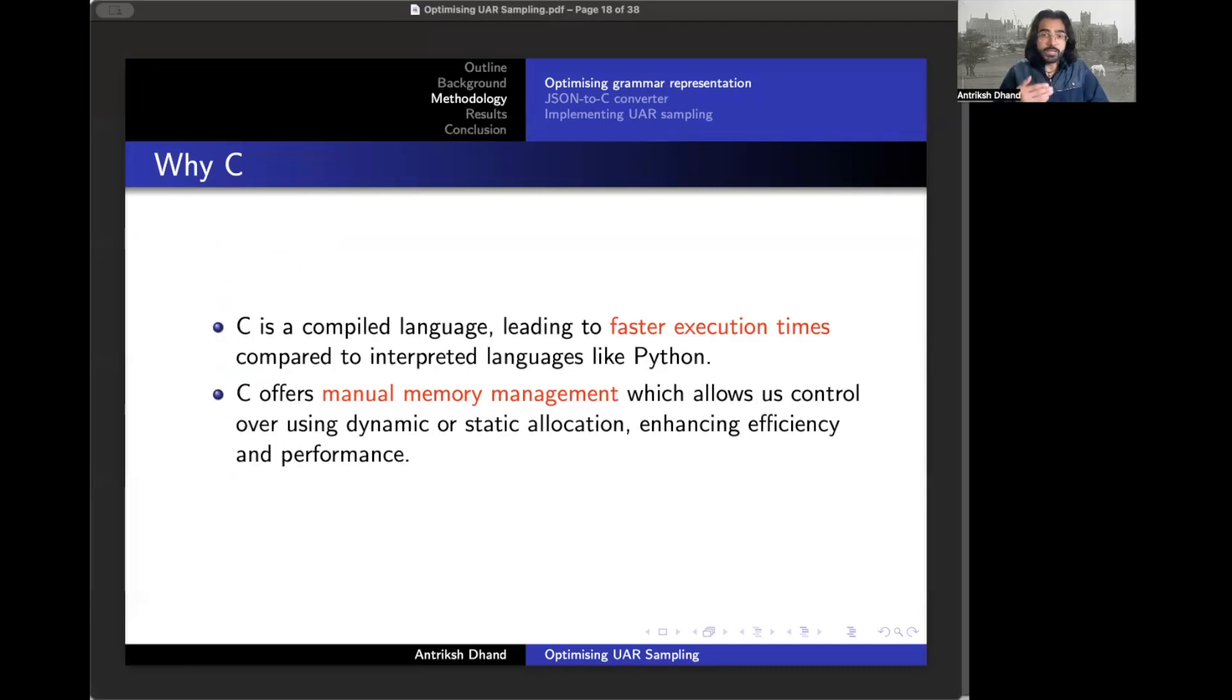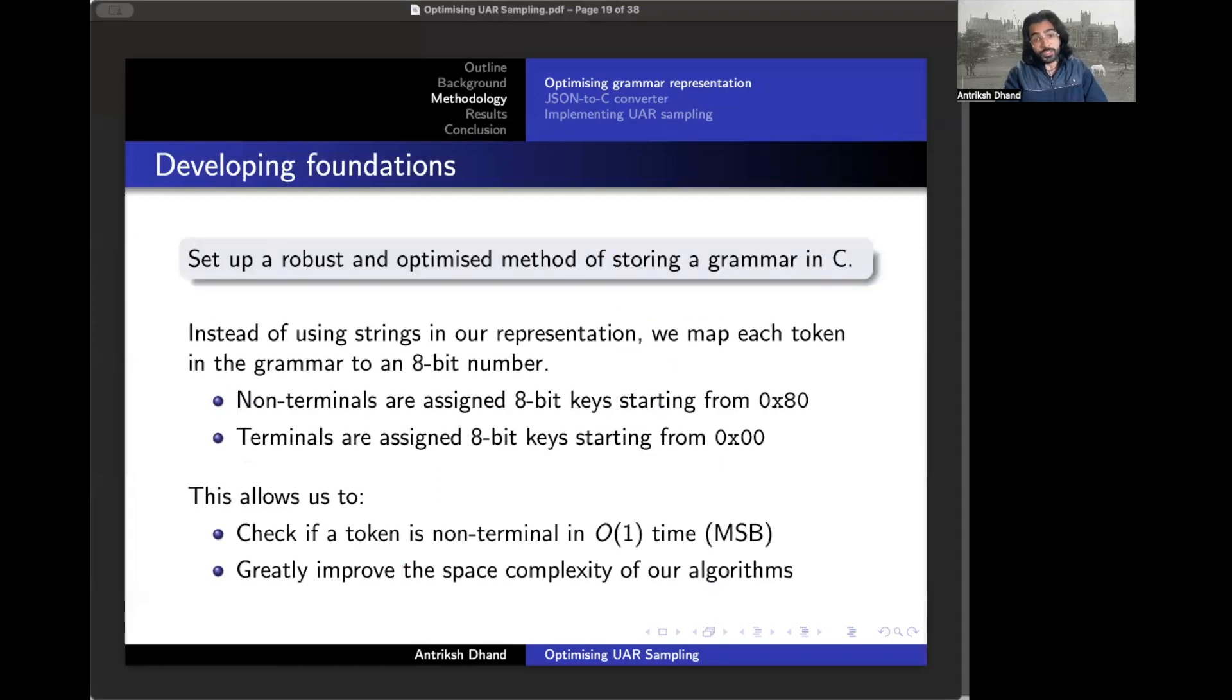First off, C was our programming language of choice here. C gives you precise control over the hardware of your computer. And this is important because we're here to make our foundation as efficient as possible. And to do that, to make our foundation efficient, we need the ability to choose whether we want something statically allocated or dynamically allocated. And a high level language like Python just doesn't allow us to do that.